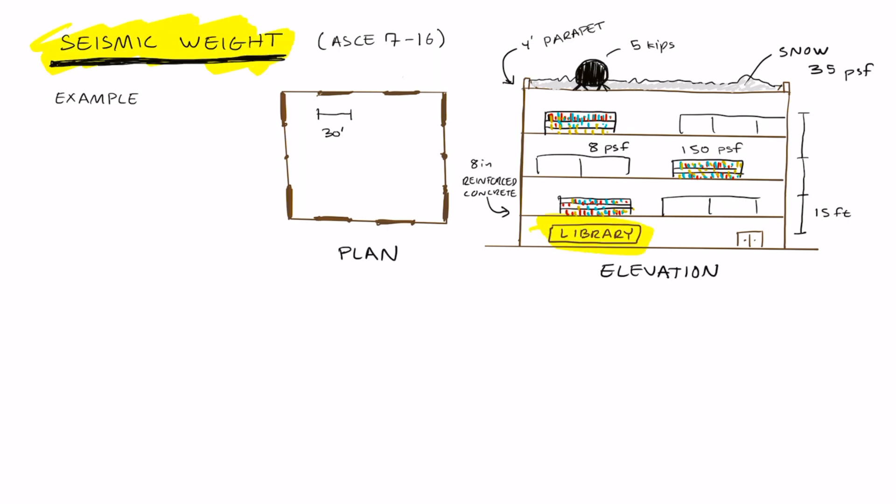Let's find the effective seismic weight of this four-story structure. Here we have the top view of the building and the side view. This building is a four-story library. This means we'll have to take into account all of the different loads inside the building and on the roof.